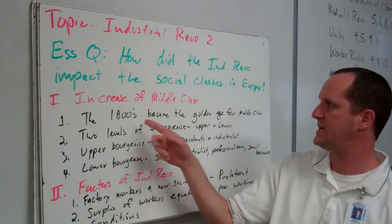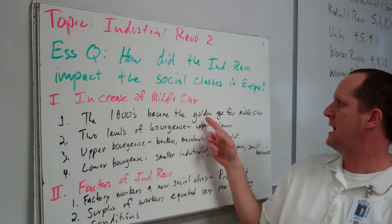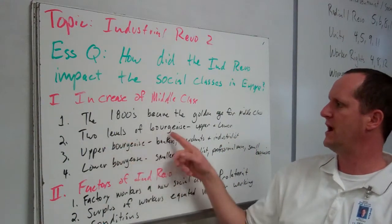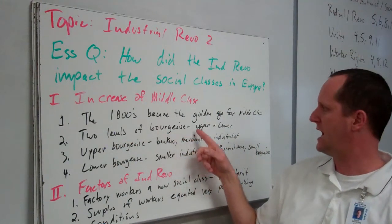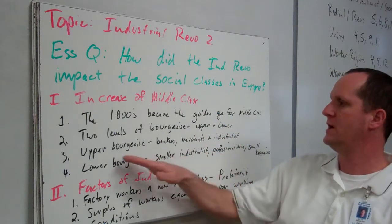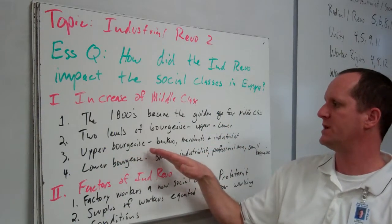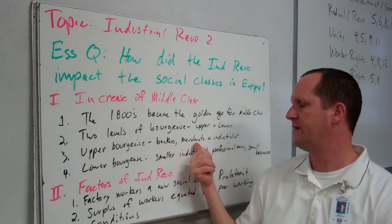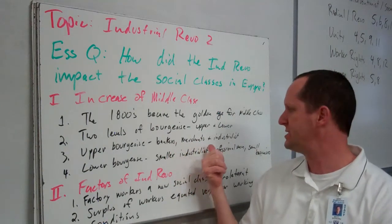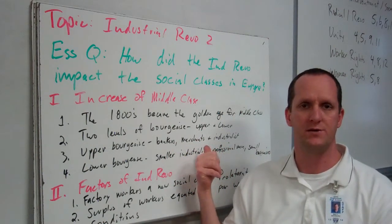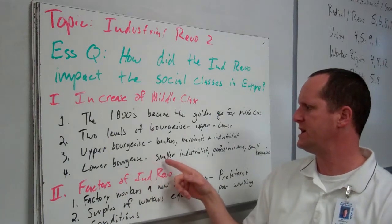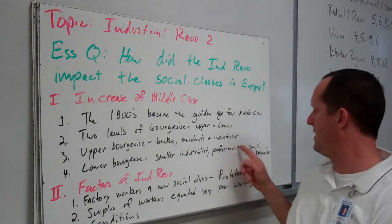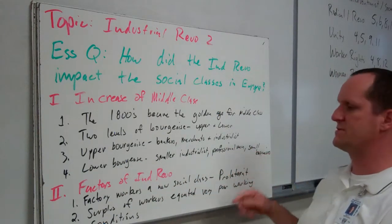The increase of the middle class in the 1800s became the golden age for the middle class. There were two levels of the bourgeoisie or middle class — upper and lower. The upper bourgeoisie typically included bankers or financiers, people who handled money, higher-end merchants, and the big industrialists. The lower bourgeoisie included smaller industrialists, professional men, and small businesses.